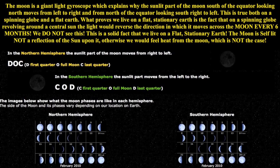The video ends with a clear statement: The moon is a giant light gyroscope which explains why the sunlit part of the moon south of the equator looking north moves from the left to the right, and from the north of the equator looking south, right to left. What proves we live on a flat, stationary Earth is the fact that on a spinning globe revolving around a central sun, the light would reverse the direction in which it moves across the moon every six months. We do not see this. The moon is self-lit, not a reflection of the sun upon it, otherwise we would feel heat from the moon, which is not the case.